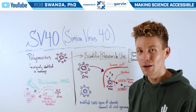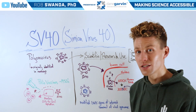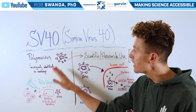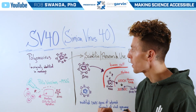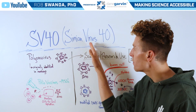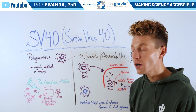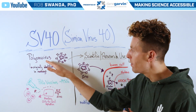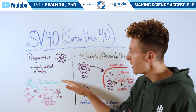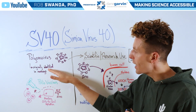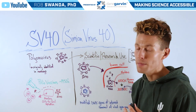A requested topic from you all for us to talk about is SV40, or simian virus 40. This is part of the polyomavirus family and was originally identified in monkeys.